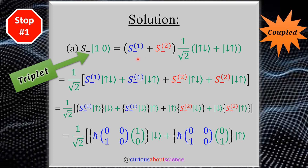We need to distribute this state into each one of these operators. For the blue operator, we operate on the first state; for the red operator, we operate on the second. So we distribute these into the bracket, and we see the distribution. The spin lowering operator acting on state 1 needs to act on both of these terms, so we distribute accordingly, color-coded so we can track each piece.